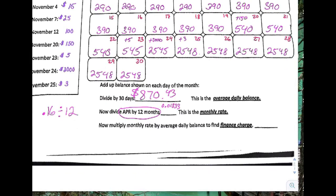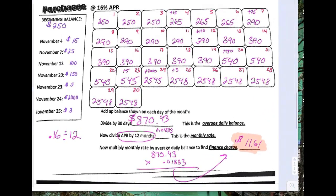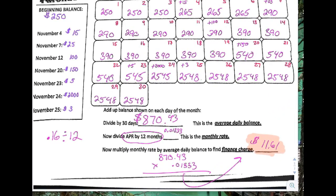The final step is to take your average daily balance of $870.43 and multiply it by 0.01333. That gives you the finance charge, which in this case is $11.61. You're going to model today's two problems right off of this example.